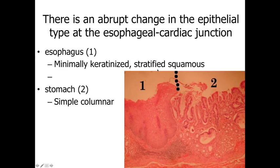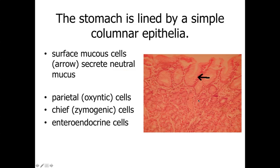There's an abrupt change in epithelia going from the esophagus — with its minimally keratinized stratified squamous epithelium — into the stomach. The esophageal-cardiac stomach junction transitions very dramatically to a simple columnar epithelium. The stomach is lined by simple columnar cells along the surface that secrete a neutral mucus, with deeper glands lined by parietal cells and chief cells, along with scattered enteroendocrine hormone-secreting cells that would be difficult to identify in hematoxylin and eosin-stained specimens.